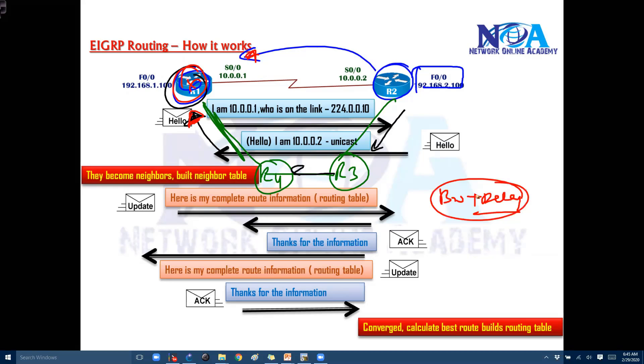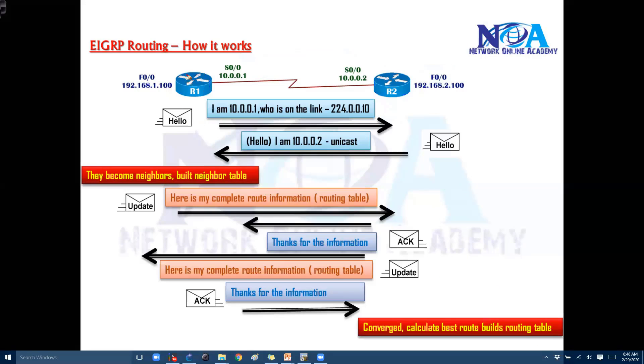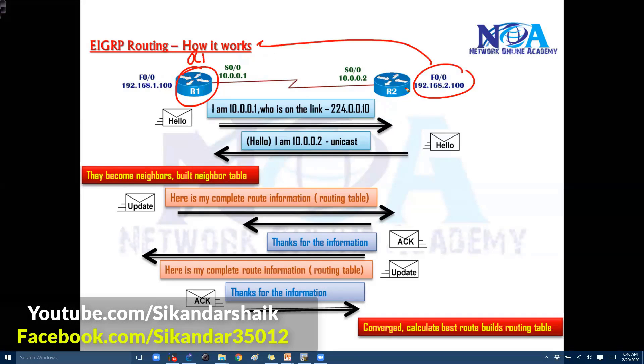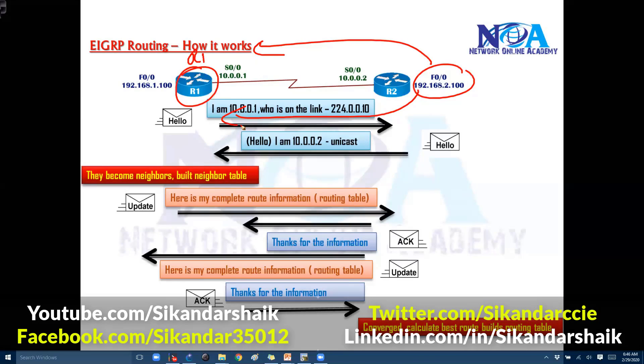It will do some calculations. We call it as metric calculations. We'll see that in the metric calculation section. And it's going to decide which one is the best route and that best route it is going to write down in the routing table. So which means that router 1 may learn about this information from multiple neighbors, but it is going to install only one, the best route, and that best route it is going to exchange with its neighbors as well.